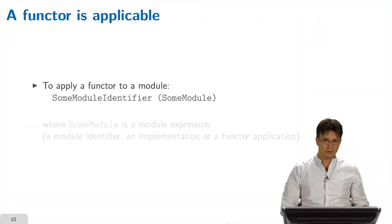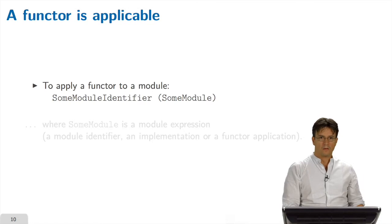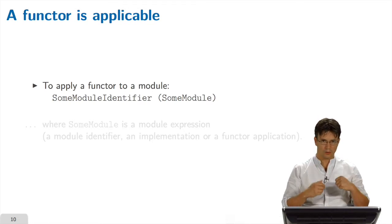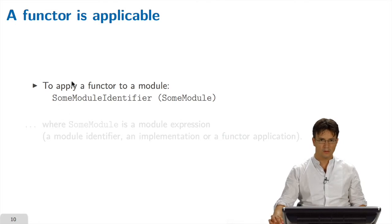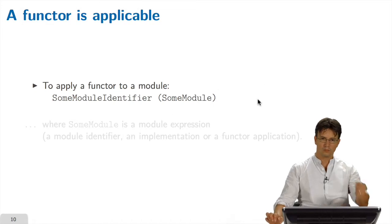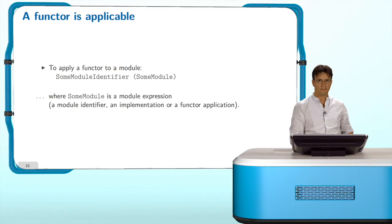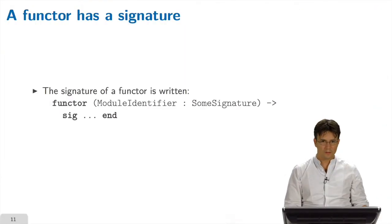As any function, a functor can be applied. To apply a functor to a module, you just use the name of your functor, and between parentheses, the modules that you want to provide to the functor. In fact, this module can be a module identifier, but also directly an implementation using struct and end, or even another functor application, so that you can chain the application of functors if you want.